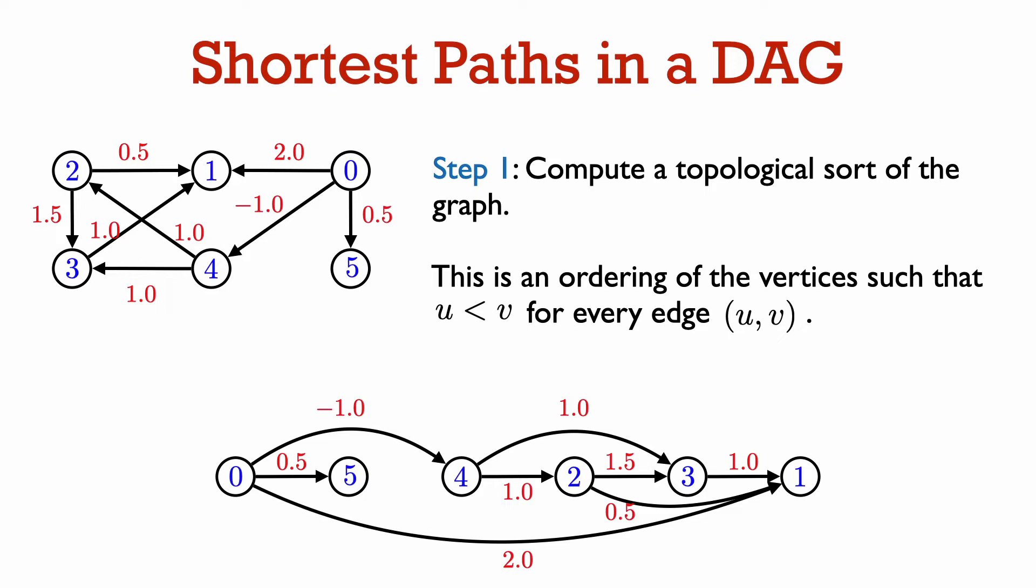So when we put the vertices on a horizontal line in topologically sorted order, all edges will go from left to right. A topological sort of this example graph is given by the ordering 0, then 5, then 4, then 2, then 3, then 1.